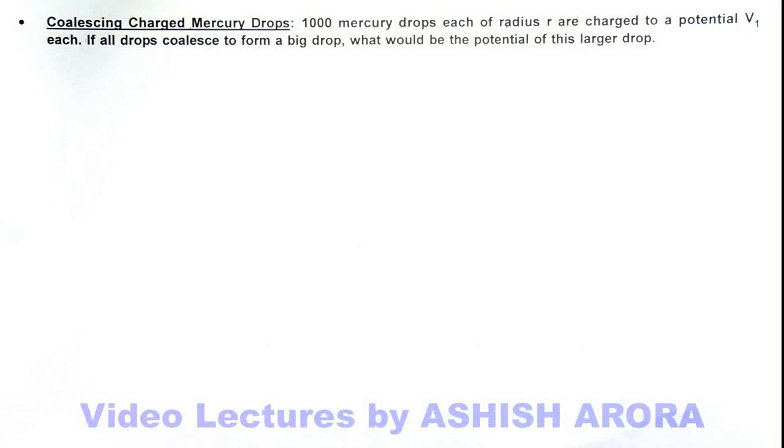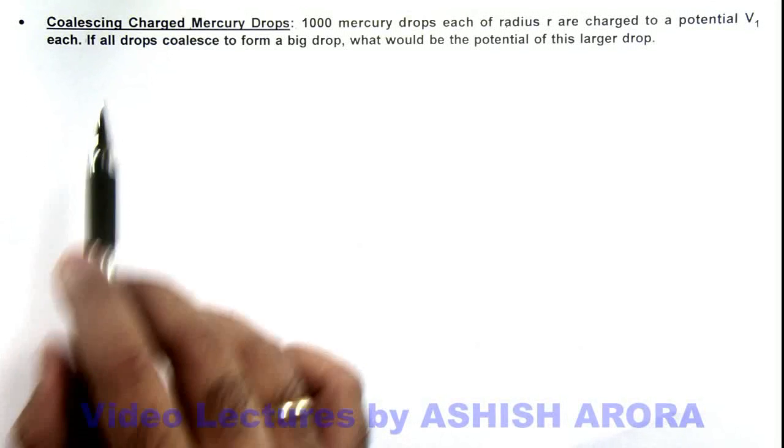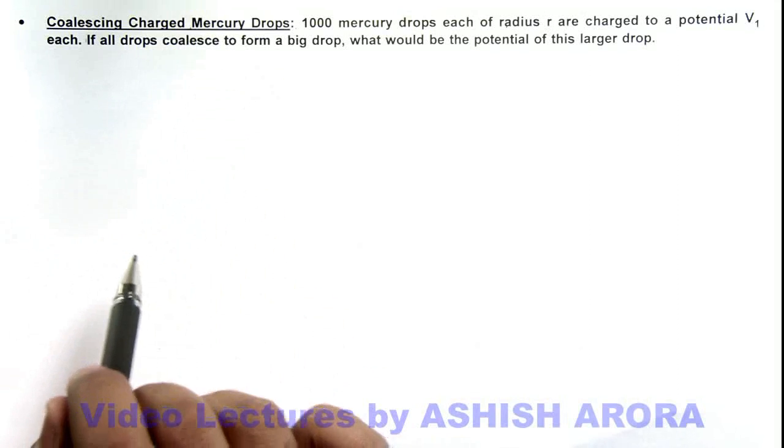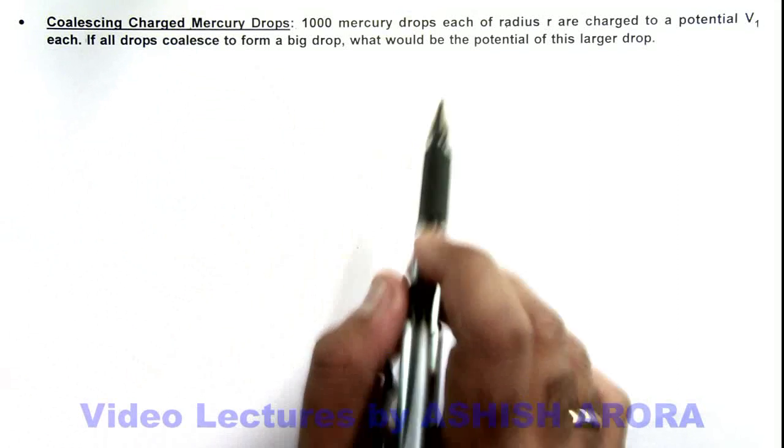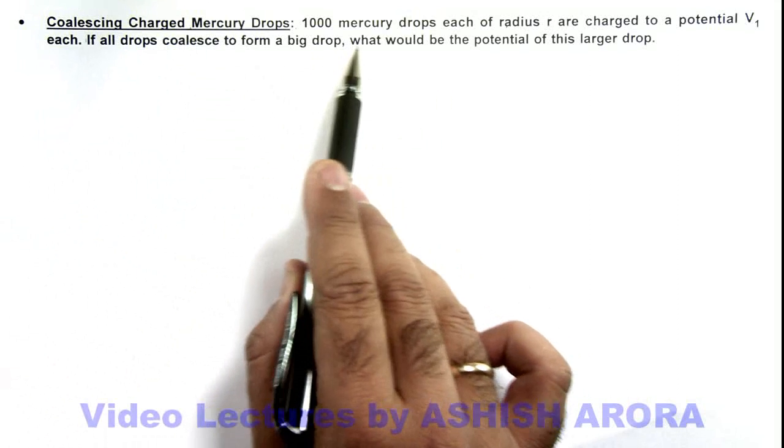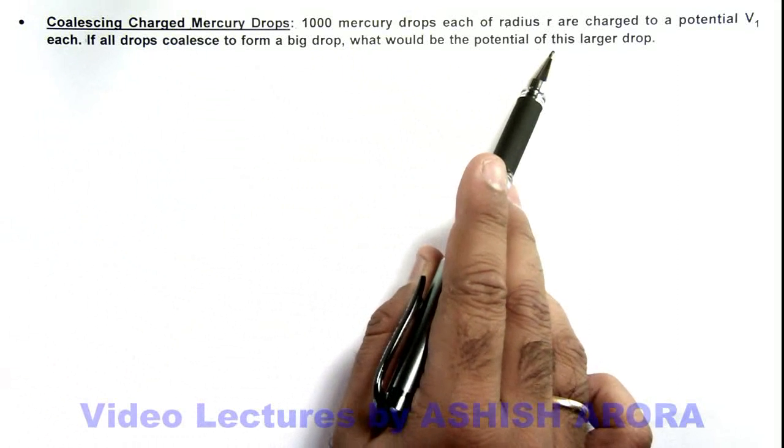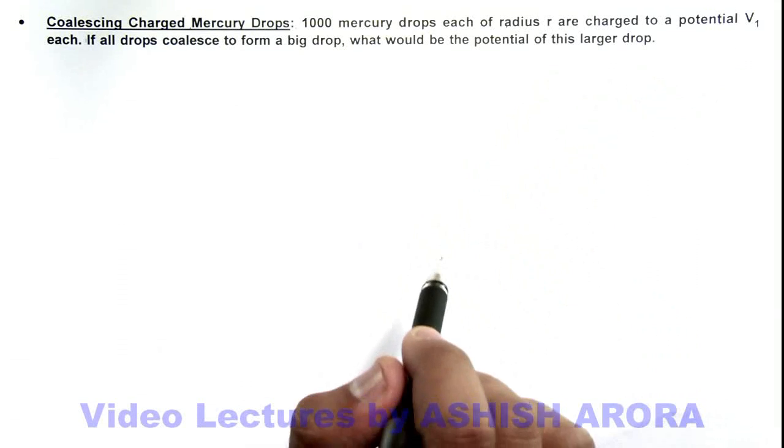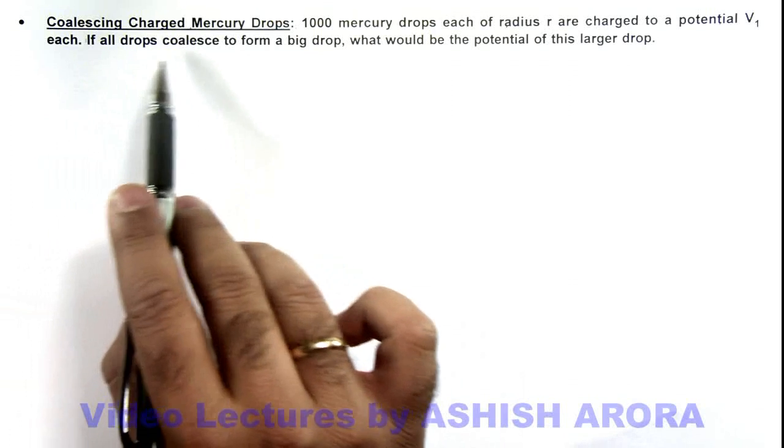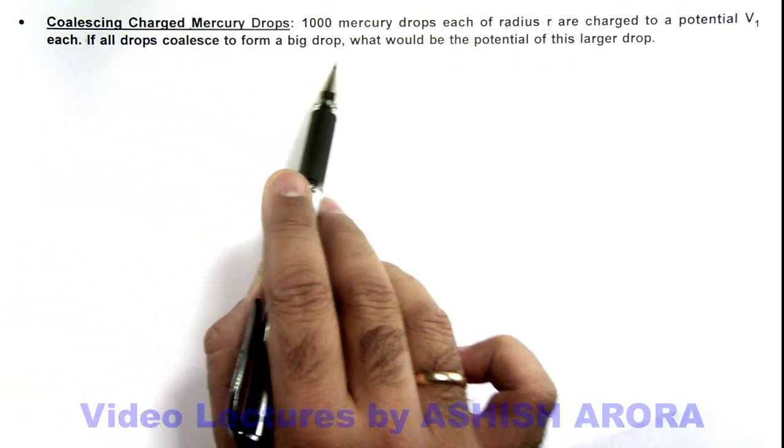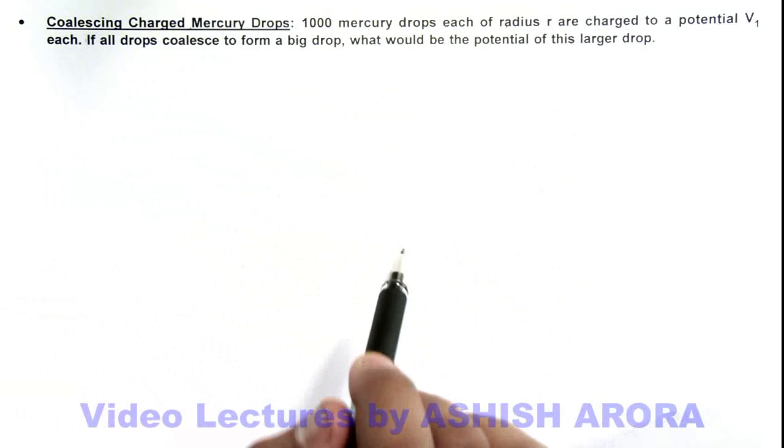Dear students, in this illustration we'll study coalescing charged mercury drops. Here the situation says: 1000 mercury drops each of radius r are charged to a potential V₁ each. If all the drops coalesce to form a bigger drop, what would be the potential of this larger drop that we are required to calculate?